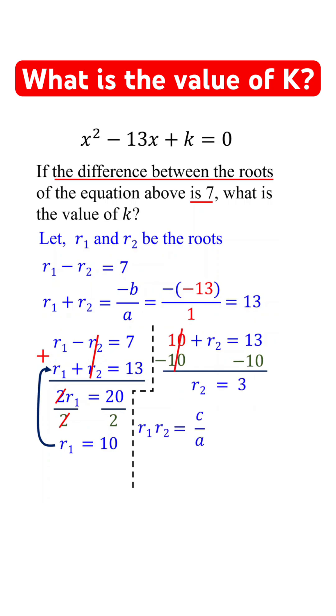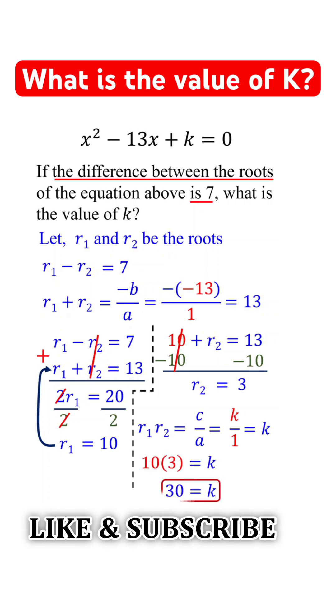The product of the roots is c over a. For the given quadratic equation, c is k and a is 1, which equals k. Since r1 is 10 and r2 is 3, k equals 30.